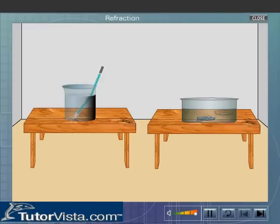Here you can see a pencil dipped in a glass beaker and a coin placed at the bottom of a trough. What do you observe? The pencil looks bent and the coin appears raised.